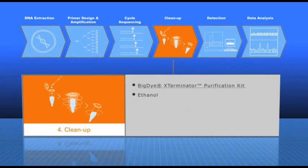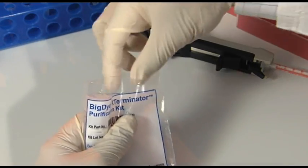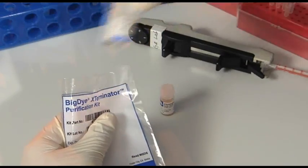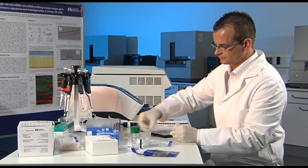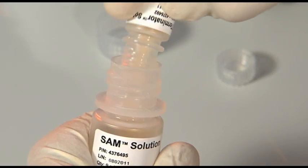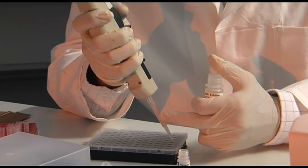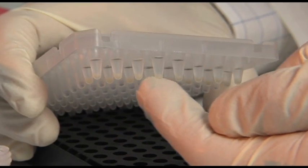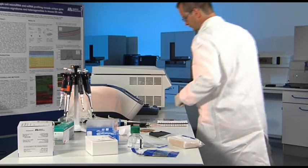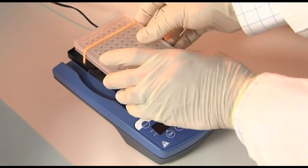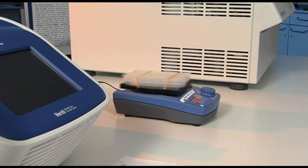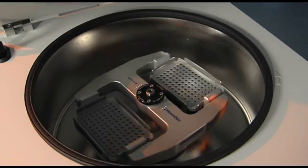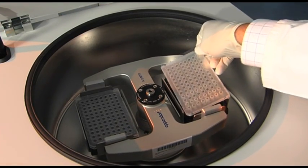Clean-up: An excess of fluorescent labeled dideoxynucleotides and salts is then effectively removed in a purification step using the BigDye XTerminator Purification Kit. The reagents are pipetted directly into the original sequencing plate. The plate is sealed and thoroughly shaken for five minutes on the vortexer and centrifuged briefly before electrophoresis. Usage of the BigDye XTerminator Purification Kit leads to clean sequences with high signal intensity, often resulting in longer reads with higher quality.